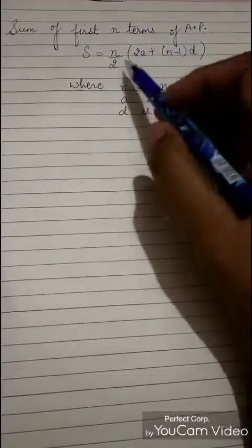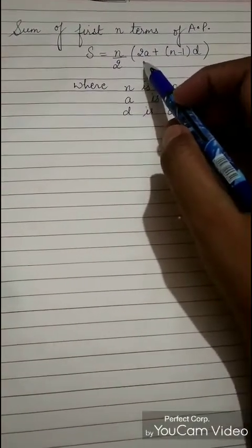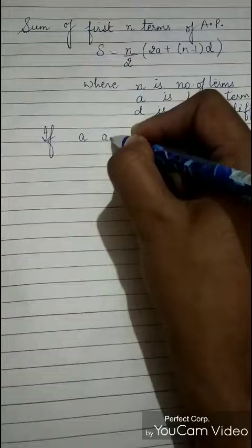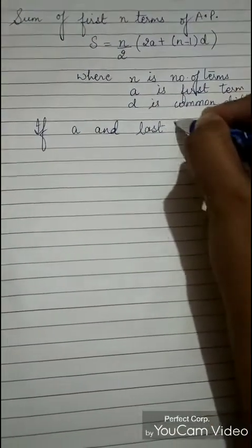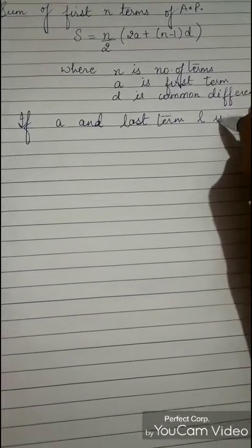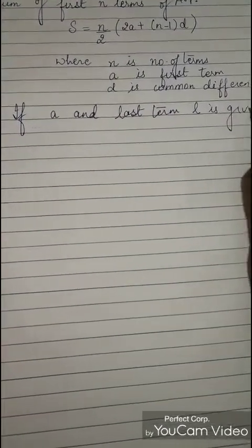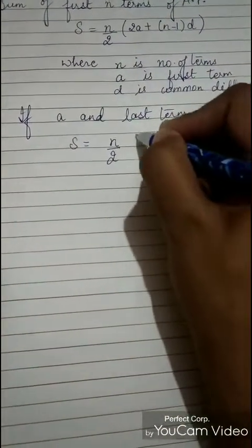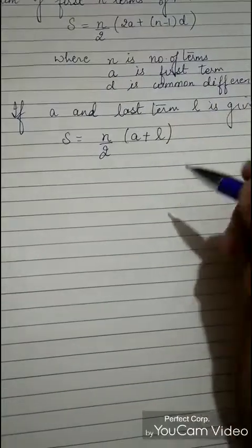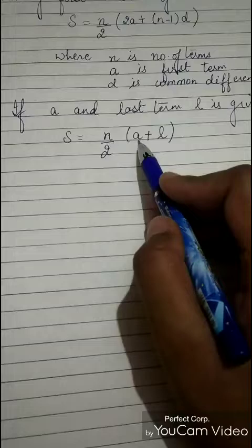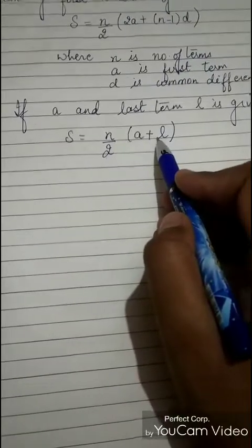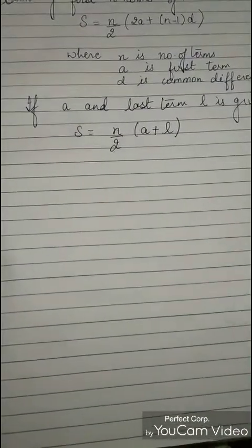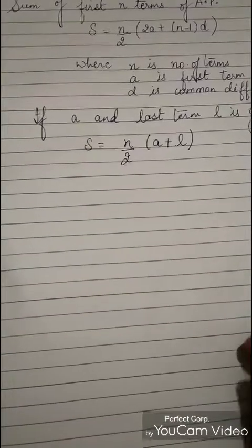Sum of first n terms of the AP is N upon 2 times 2A plus N minus 1 into D. Now, if first term A and last term L is given to you, then the formula for sum is N upon 2 into A plus L, where N is the number of terms, A is the first term and L is the last term of the AP. Now going for the exercise, Exercise 5.3.